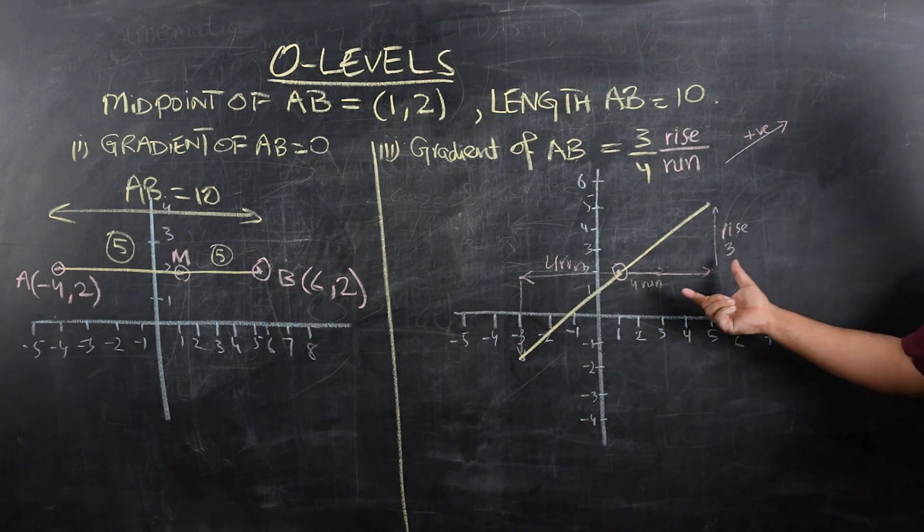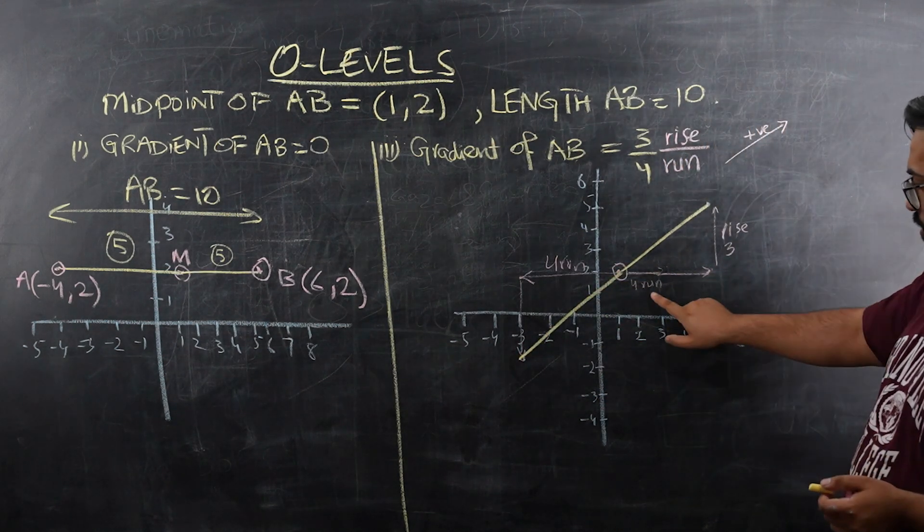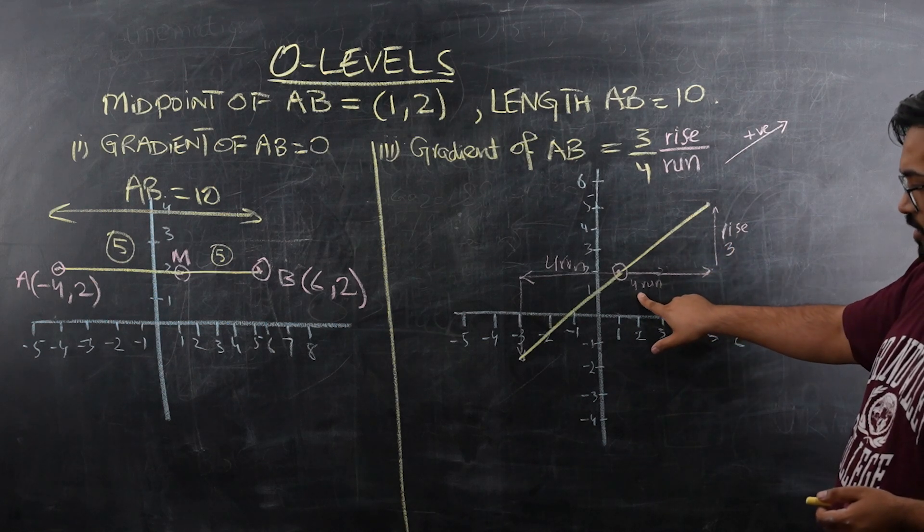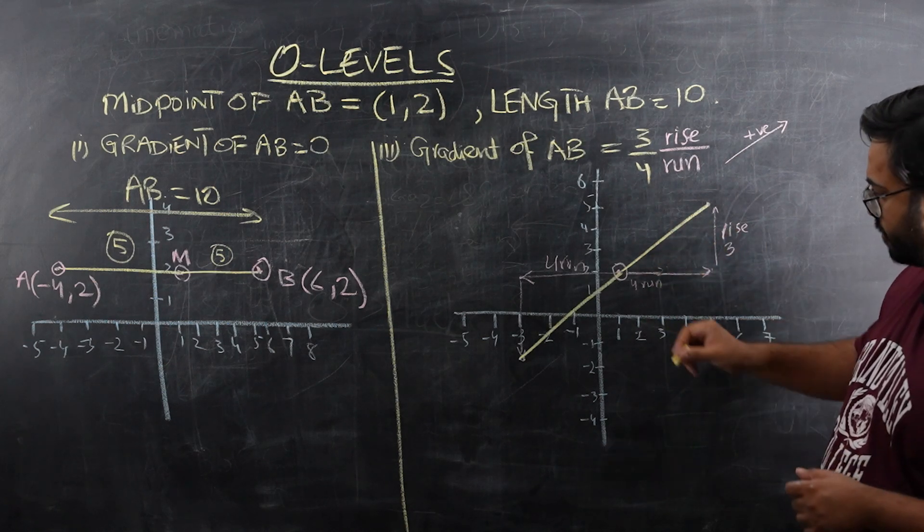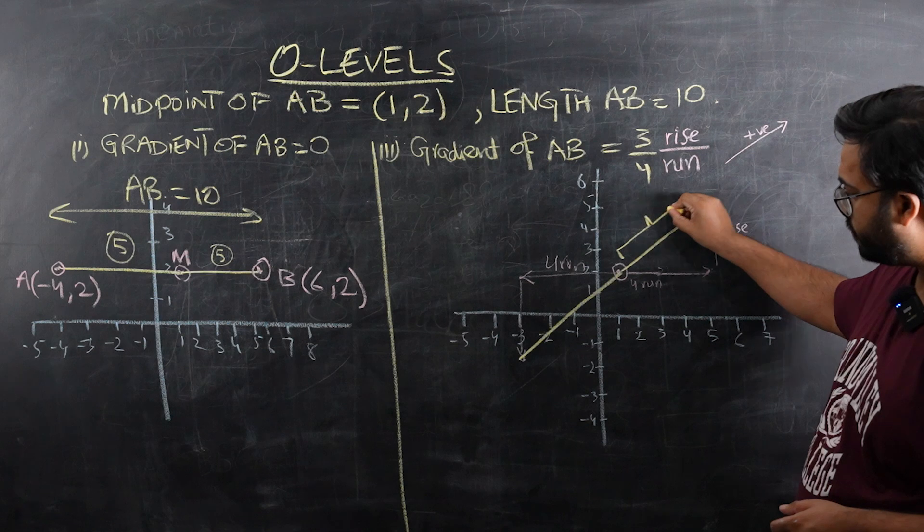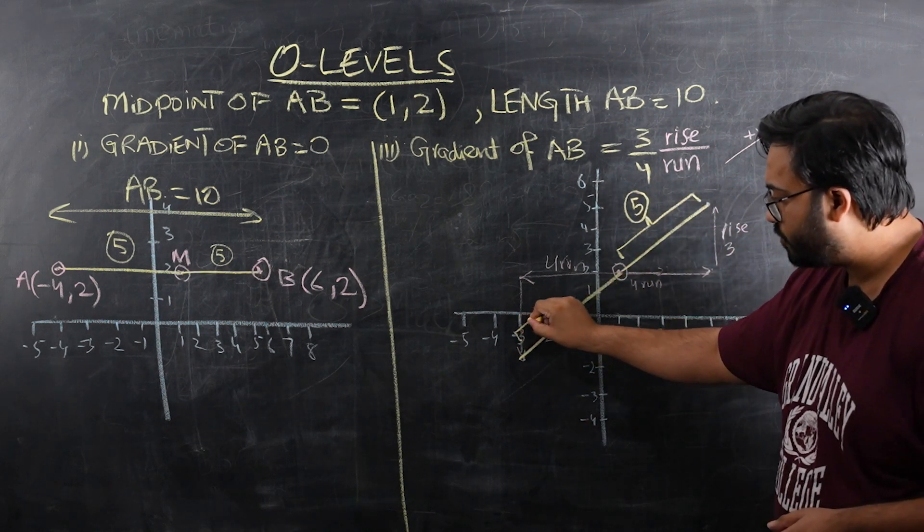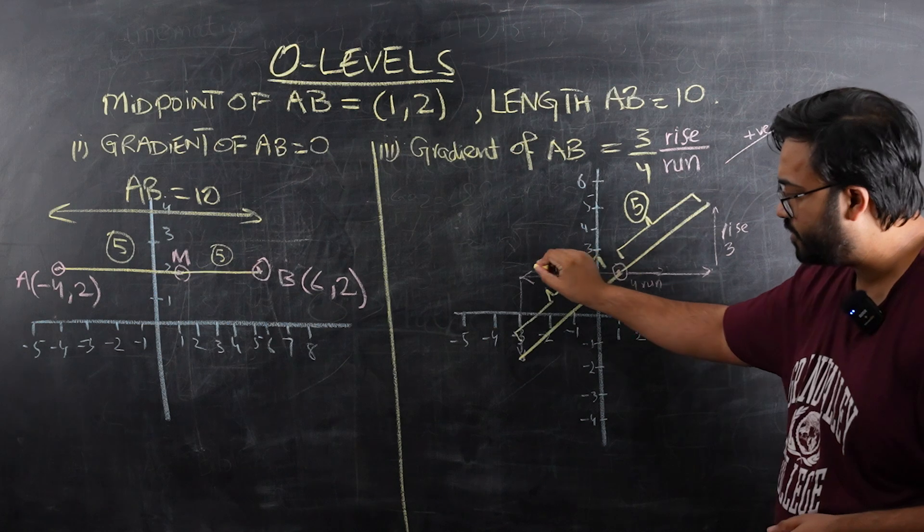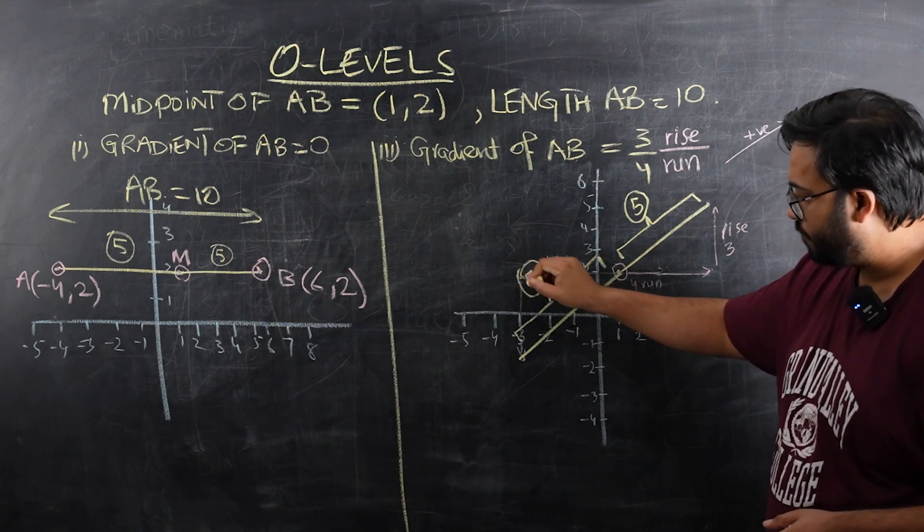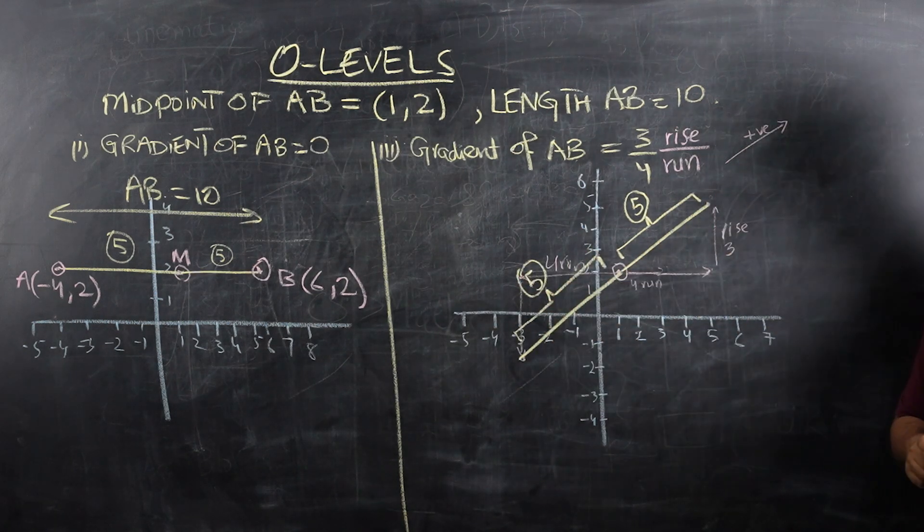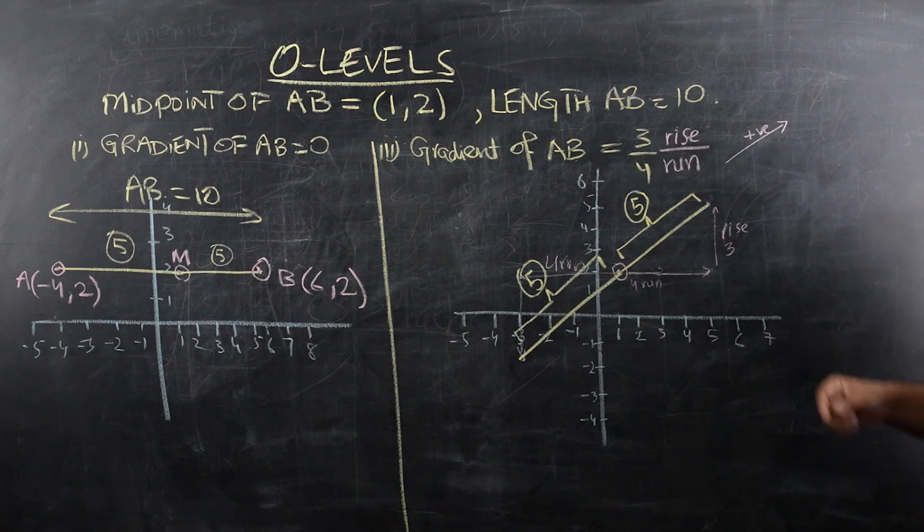Now we want to make sure that the length is 10. You can see this is a Pythagoras theorem. This is 4, this is 3. If you apply Pythagoras theorem, you're going to find out that this length is going to become 5 units. And similarly, this length will similarly become 5 units as well. So we can see this length is now 10 units, and the gradient of this line is 3 over 4.